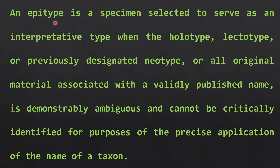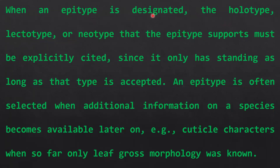Then, the epitype. An epitype is a specimen selected to serve as an interpretive type when the holotype, lectotype, or previously designated neotype, or all original material associated with a validly published name, is demonstrably ambiguous and cannot be critically identified for purposes of the precise application of the name of a taxon. When an epitype is designated, the holotype, lectotype, or neotype that the epitype supports must be explicitly cited. An epitype is often selected when additional information on a species becomes available later, such as cuticle characters when previously only leaf gross morphology was known.